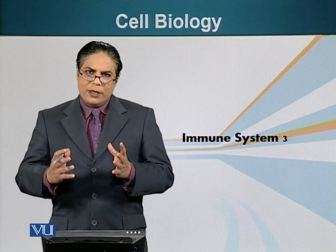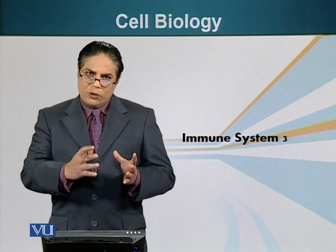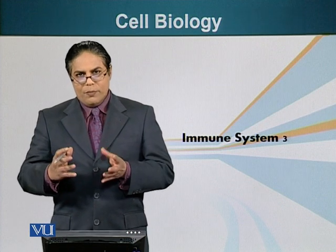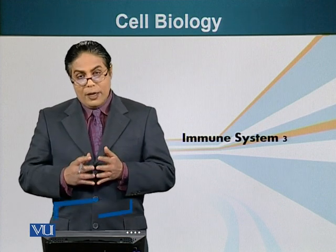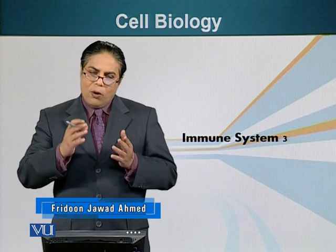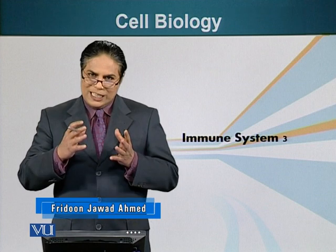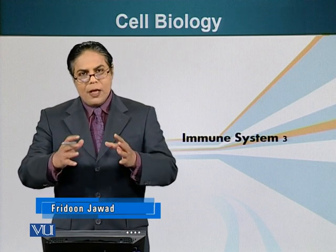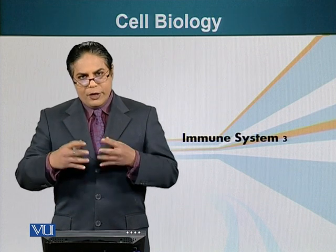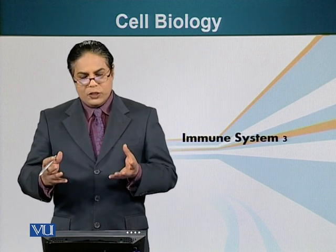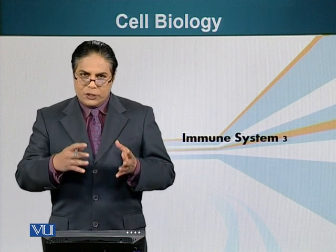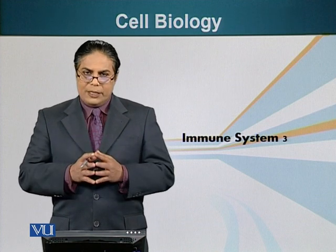We have talked about the response of immune cells to injury. The example we were talking about is a thorn prick, and incidentally, that thorn also carried some pathogens — some bacteria with it. We said that the first response to this injury is release of histamine by mast cells to dilate the blood vessels, allowing other cells to come in and take action.